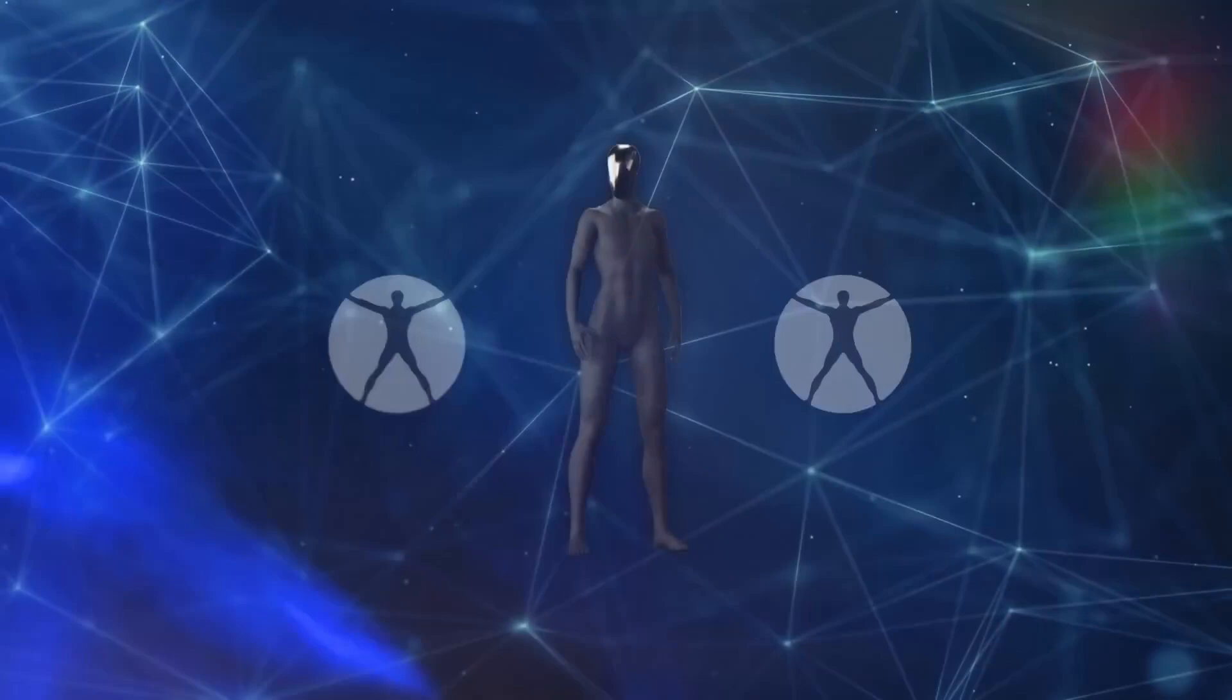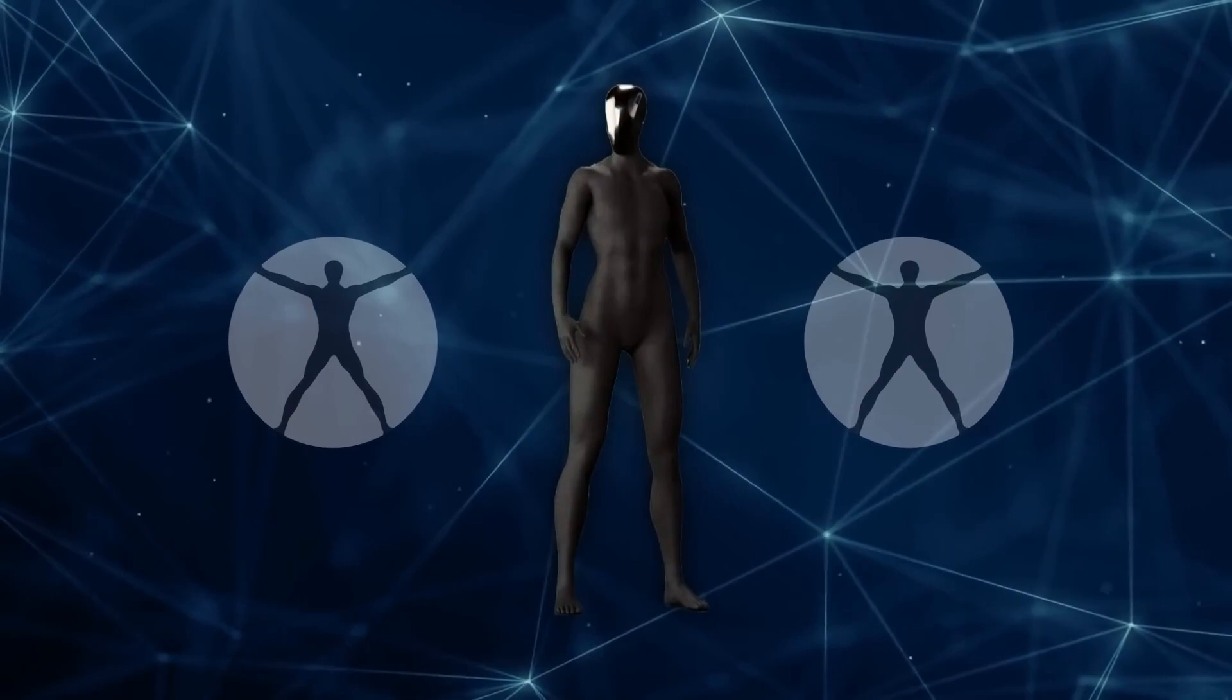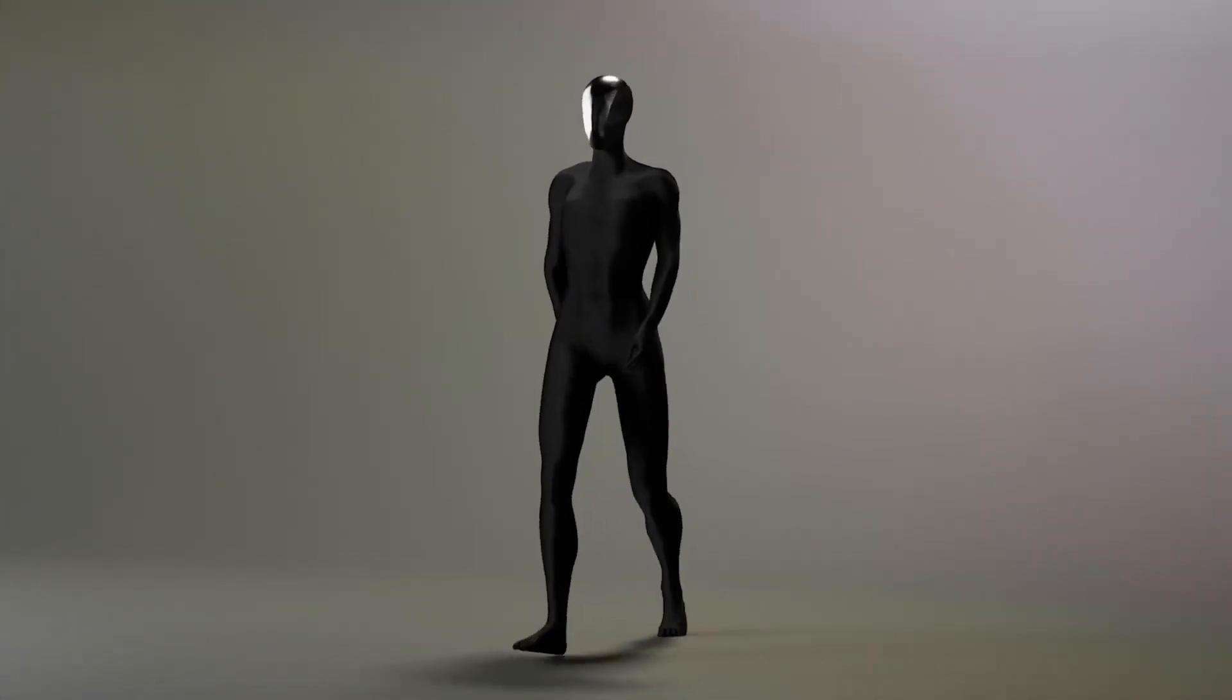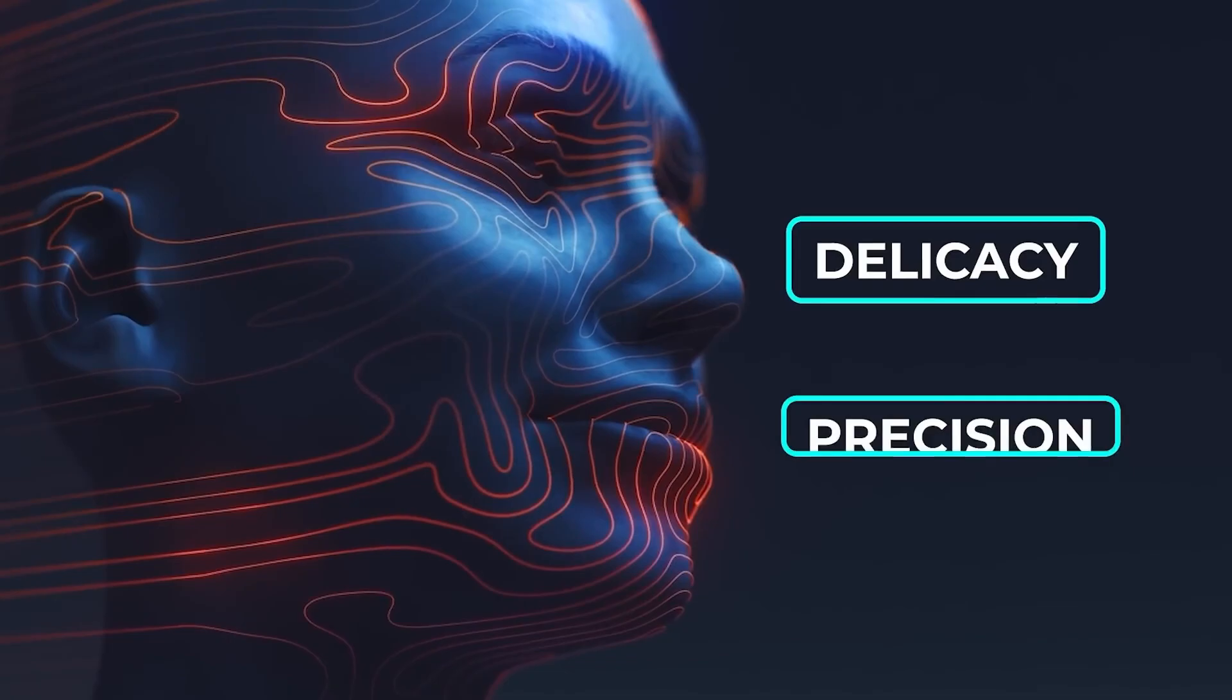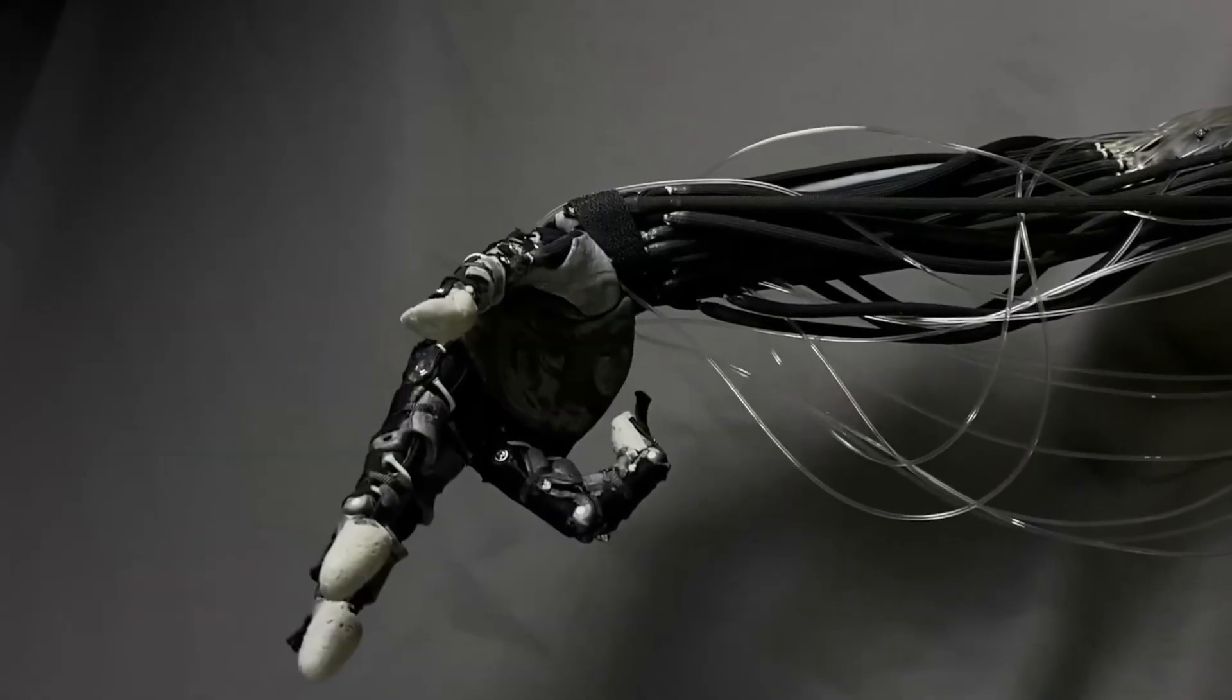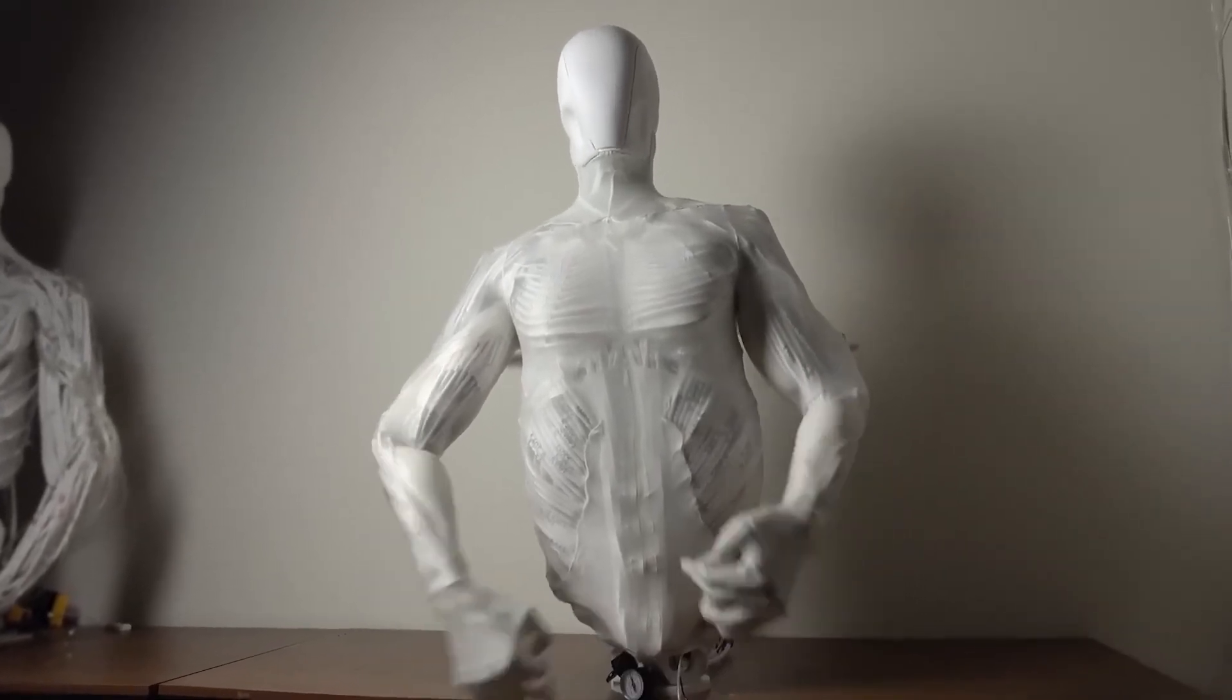One of the smartest decisions Clone Robotics made was opting for water-powered muscles instead of traditional motors. Why does this matter? Because it gives the robot a softer, more human-like quality. That makes it perfect for tasks requiring delicacy and precision. Plus, the hydraulic system eliminates the need for bulky mechanical components, making the design more compact and efficient.